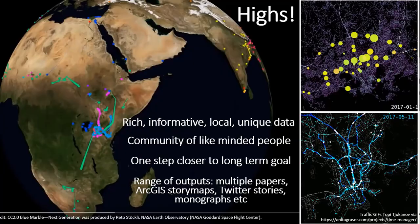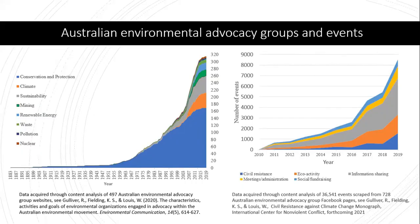Here are a couple of the outputs we've had. On the left, that graph data has been used for papers in a monograph showing the evolution of the environmental movement based on data from the project, from 1883 to 2019 — this is the growth of these groups. Half of the groups were focused on conservation, and we can see when climate change groups started — that's the orange, around 2006. On the right is a graph showing the 35,000–36,000 events scraped off Facebook between 2010 and 2019.